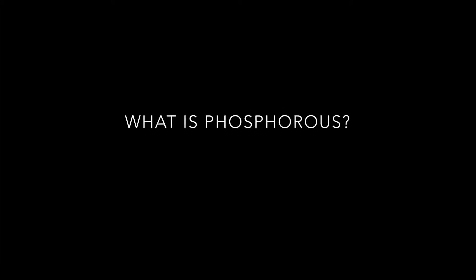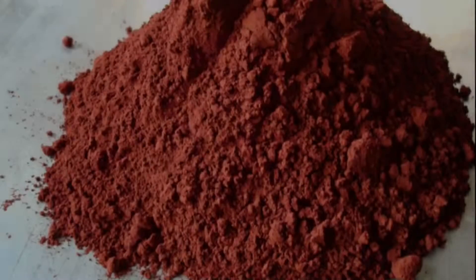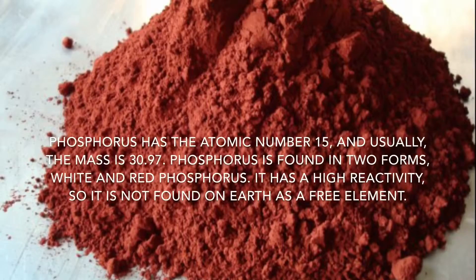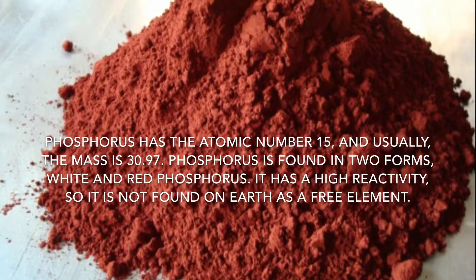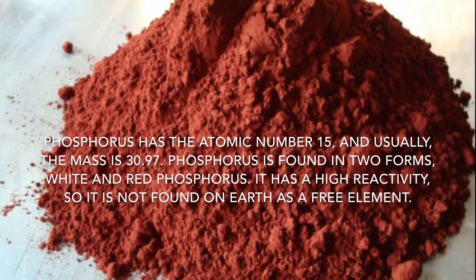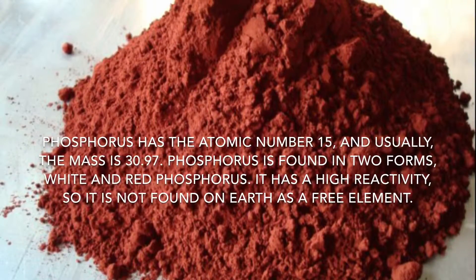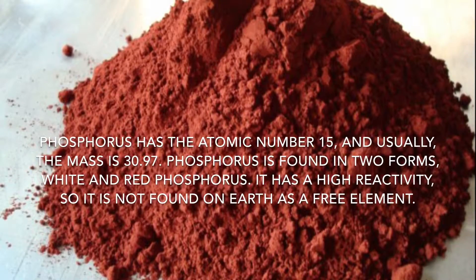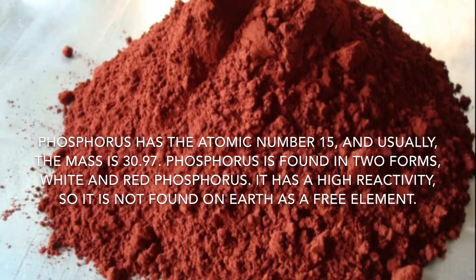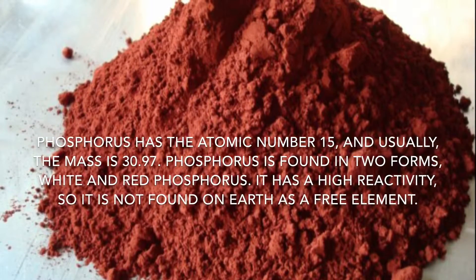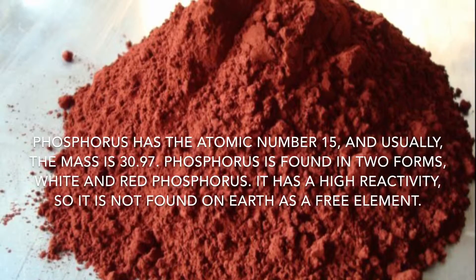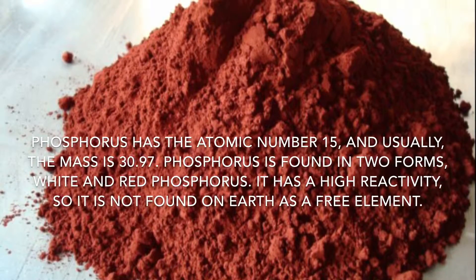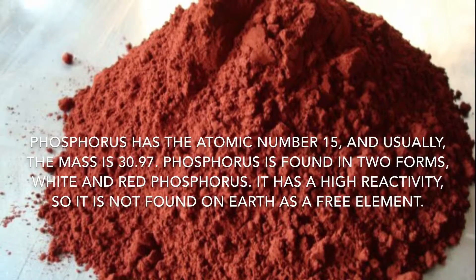What is Phosphorus? Phosphorus has the atomic number 15 and usually the mass is 30.97. Phosphorus is found in two forms, white and red phosphorus. It has a high reactivity, so it is not found on Earth as a free element.